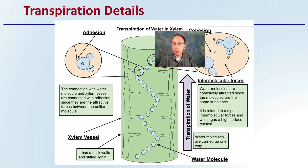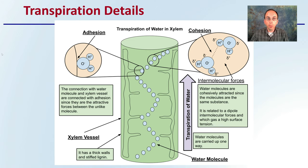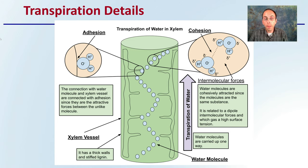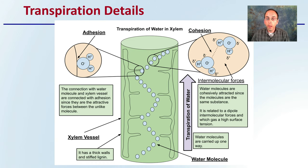Looking at the details of transpiration — the properties of water, the hydrogen bonding of water, and the adhesive and cohesive properties of water allow it to work its way up the stem. Within the xylem vessel — and if there's xylem, there's also phloem — phloem carries more of the minerals and nutrients and can move up and down the plant. The xylem basically goes from the roots up to the shoots. The intermolecular forces, the partial positive and partial negative charges, link water molecules together, helping water move its way up through the plant.